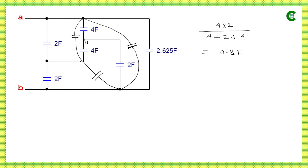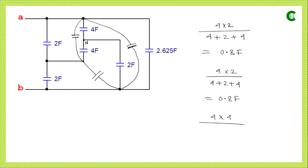For the second capacitor, the capacitance value is again 4 multiplied by 2 divided by 4 plus 2 plus 4, giving again 0.8 farad. For the third capacitor, the two endpoint capacitors are both 4F, so the value is 4 multiplied by 4 divided by 4 plus 2 plus 4, giving 1.6 farad.